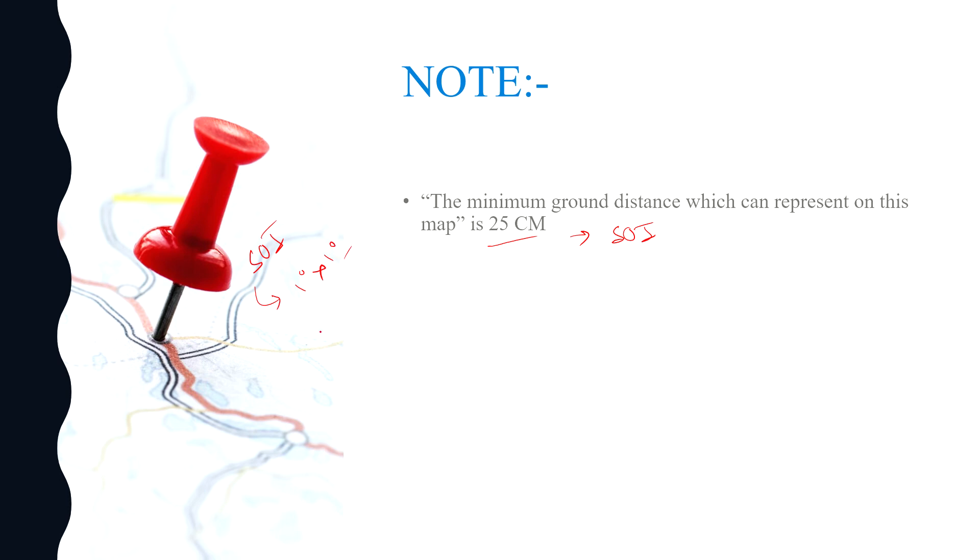So what is the minimum ground distance? We know for the 1 degree by 1 degree toposheet, the scale value is 1 is to 2.5 million, means 1 is to 2,500,000.